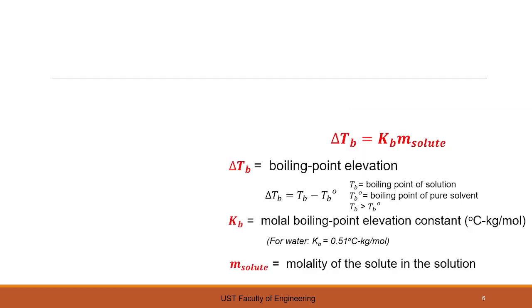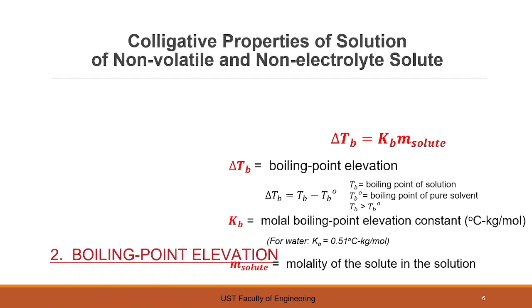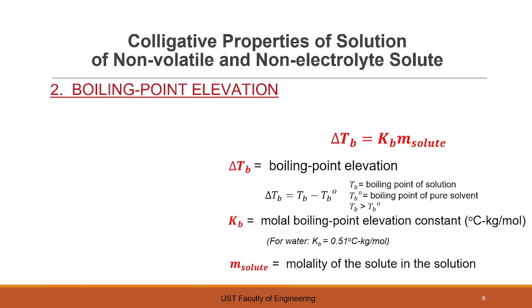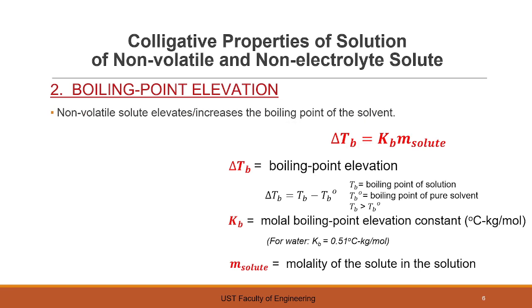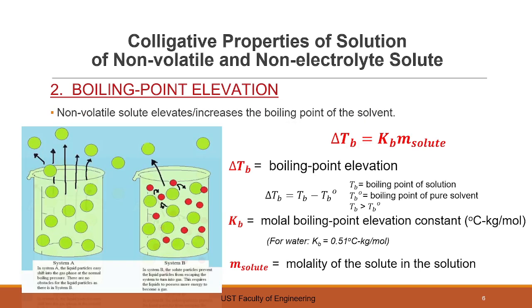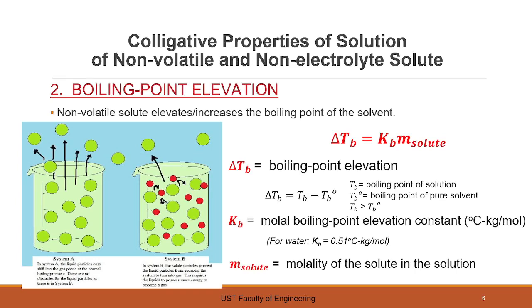Another colligative property is boiling point elevation. A non-volatile solute elevates or increases the boiling point of a solvent. The solute particles, the red ones in the diagram, prevent the liquid particles from escaping the system to turn into gas. In order to break the bonds of the liquid, it requires more energy to become a gas, which translates to a higher boiling point of our solution.